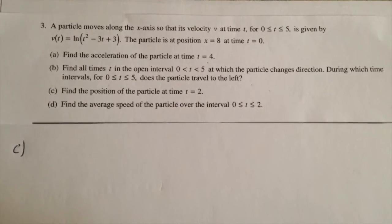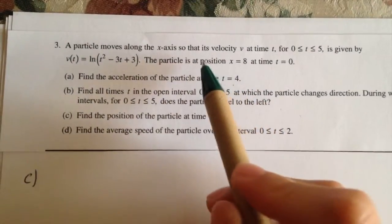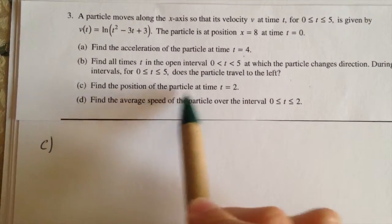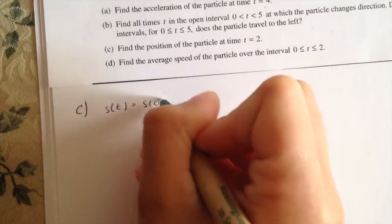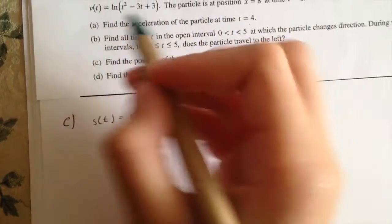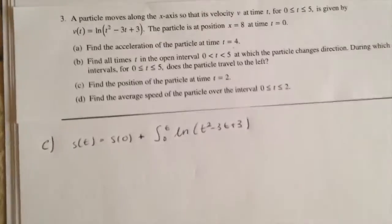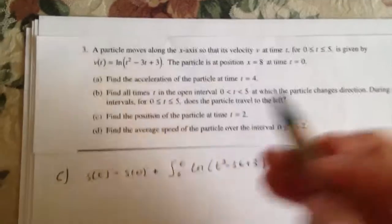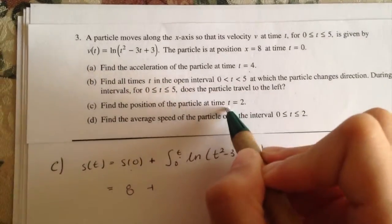So part c states: find the position of the particle at time t equals 2. The problem gave us that the particle is at position x equals 8 at time 0. For the position, we write s of t equals s of 0 plus the integral from 0 to t of the velocity equation ln of t squared minus 3t plus 3 dt. Because they have already given us the position at time 0, which is 8, we just plug it in, and for t we use t equals 2.